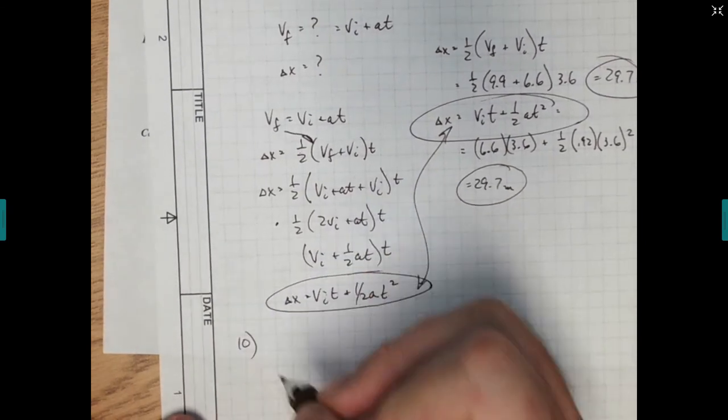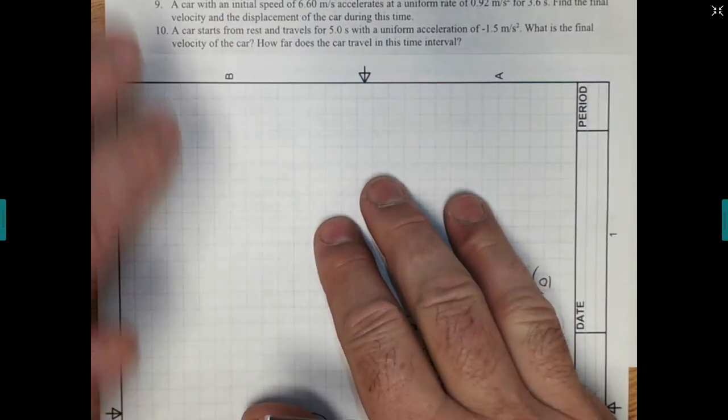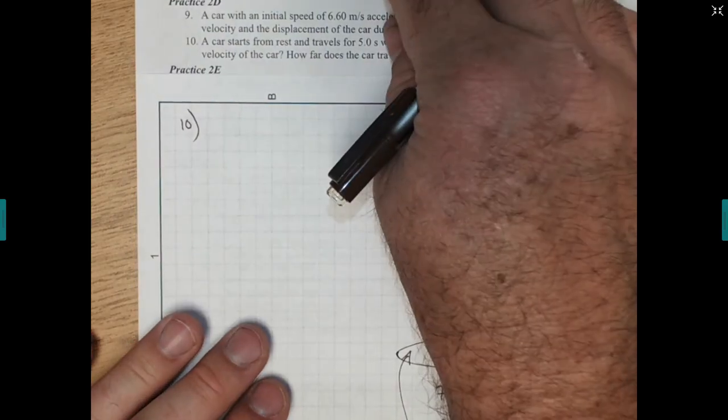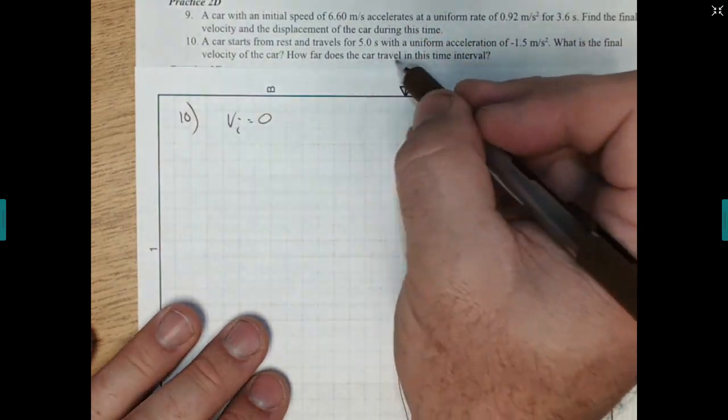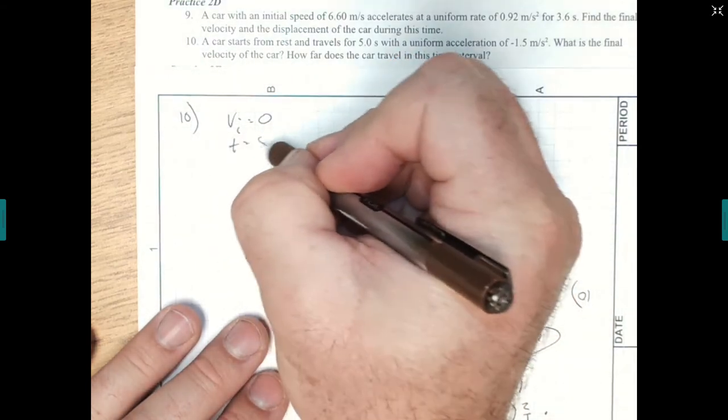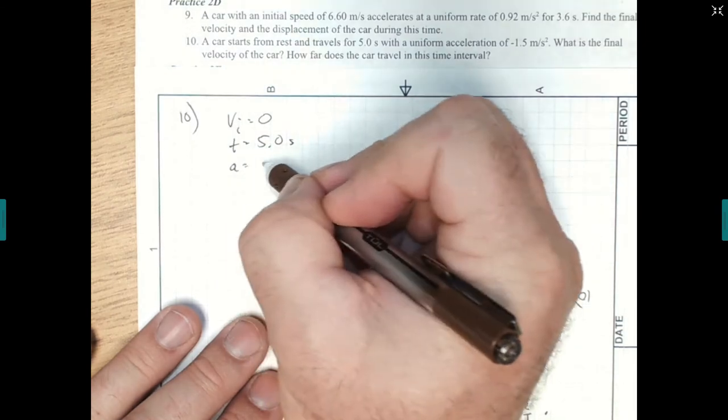So let's look at number 10. I bet number 10 is almost the same. I'm going to flip it over so we can see the number here. Number 10. Car starts from rest. If it's starting from rest, my initial velocity is going to be 0. Travels for 5 seconds. So my time is 5 seconds. With a uniform acceleration of negative.